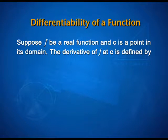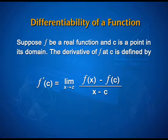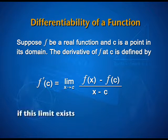The definition says that if f is a real function and c is a point in its domain, then the derivative of f at c is defined to be the limit of the quotient f(x) minus f(c) divided by x minus c. If this limit exists — and the whole discussion of today is on this condition — this limit may not always exist.